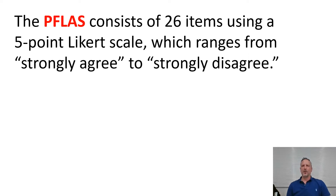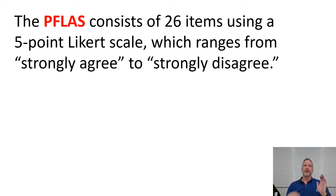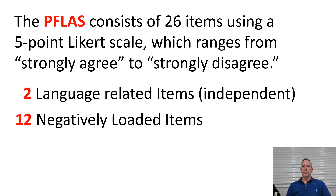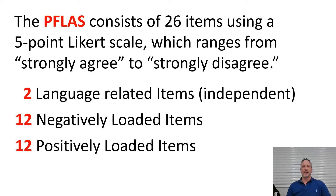During our research, we came across many foreign language anxiety scales, but to the best of our knowledge we could not find any presenting in a foreign language anxiety scale. That was the reason we decided to undertake this project. The presenting in a foreign language anxiety scale consists of 26 items using a five-point Likert scale, ranging from strongly agree to strongly disagree. Two of the items are independent and language-related, which I'll explain a bit more later. Twelve of the items are negatively loaded and 12 are positively loaded — essentially opposite pairs.